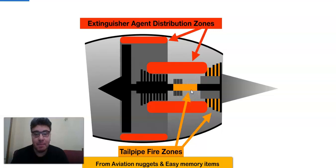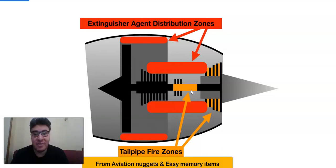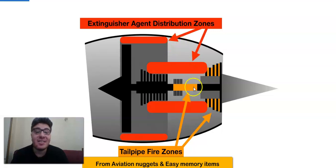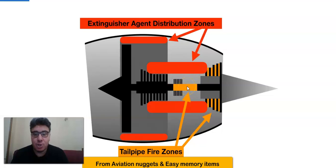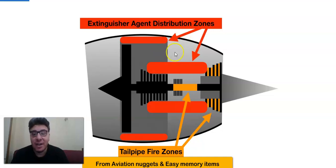Why do I keep posting this difference, and why do we need to showcase the difference between these two types of fire? Airbus conducted a survey and found that many pilots mistakenly apply the engine fire procedure for the tailpipe fire, which is totally wrong and will not solve any problem with the tailpipe fire. As a pilot or aircraft maintenance personnel, you need to clearly identify the difference between engine fire and tailpipe fire.